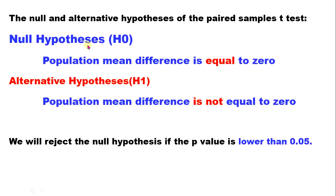This is the hypothesis. The null hypothesis states that the population mean difference is equal to zero — meaning the before and after means are equal. The alternative hypothesis states that the population mean difference is not equal to zero.